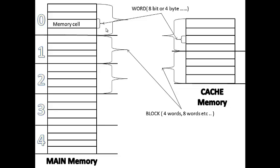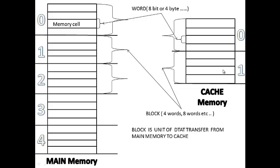The block index number identifies each block: this is the zeroth block, this is the first, second, third, and so on — index numbers normally start from zero. Similarly, cache blocks have their own index numbers. The main reason for using this block structure is that the block is the unit of data transfer: when data needs to be transferred from main memory to cache memory during address mapping, it is transferred in terms of blocks.